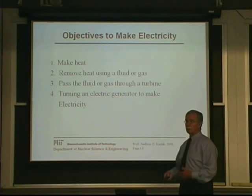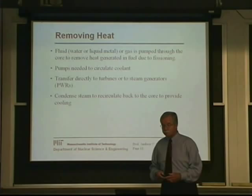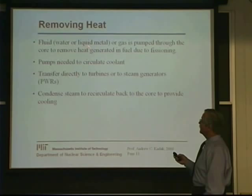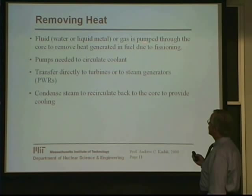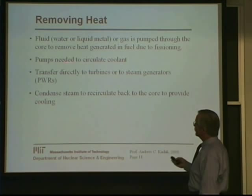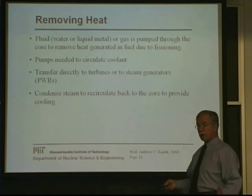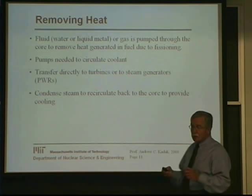In terms of heat removal, we've got to take that fluid — possibly a liquid metal in the case of breeder reactors — pump it through the core, capture the heat of the fissioning, and take it into a system circulating that fluid. Whether the heat is transferred directly to turbines as boiling steam from a BWR, or to steam generators in a pressurized water reactor, we then have to condense the steam and recirculate it back either to a steam generator or back to the core.